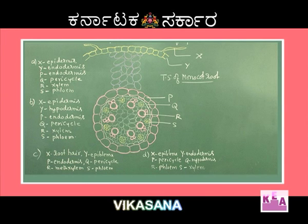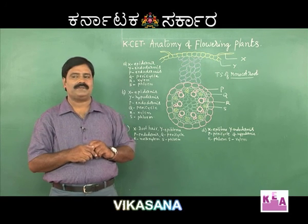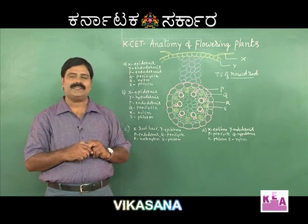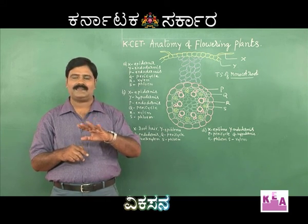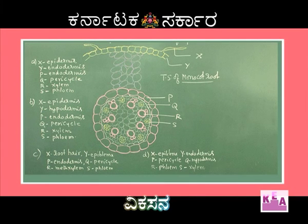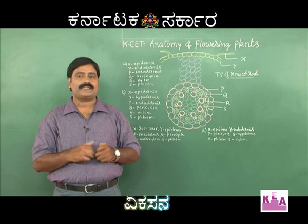The vascular bundles are arranged with xylem and phloem in alternate radii — this alternate arrangement is an important characteristic feature. Another important feature of the monocot root is the polyarch condition, meaning more than 6 vascular patches are observed. That is one important characteristic feature. Then there is also the exarch condition.